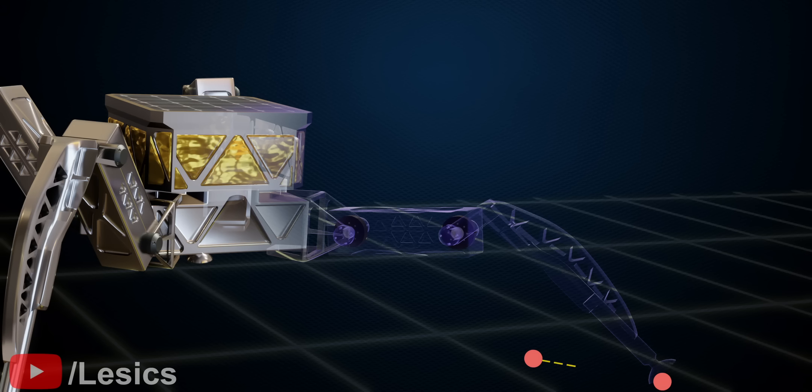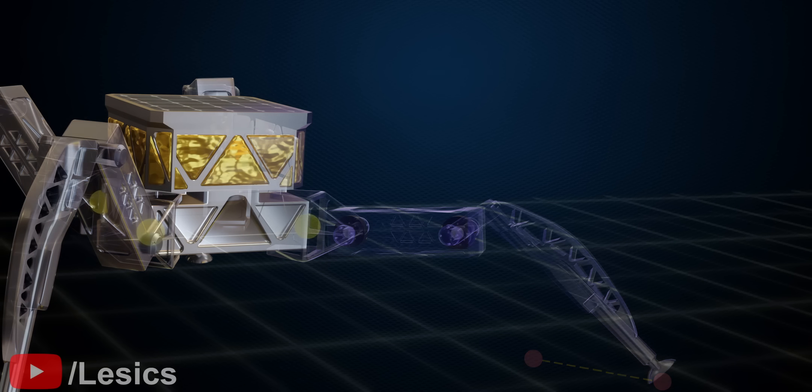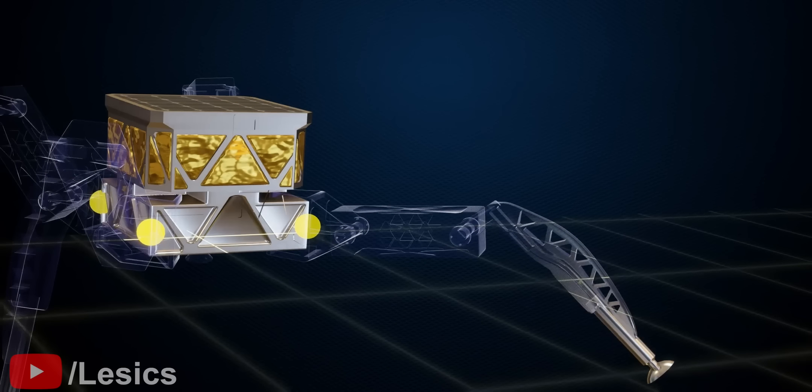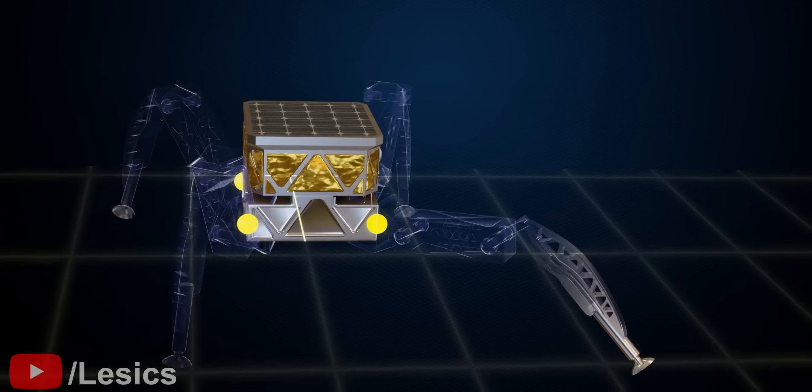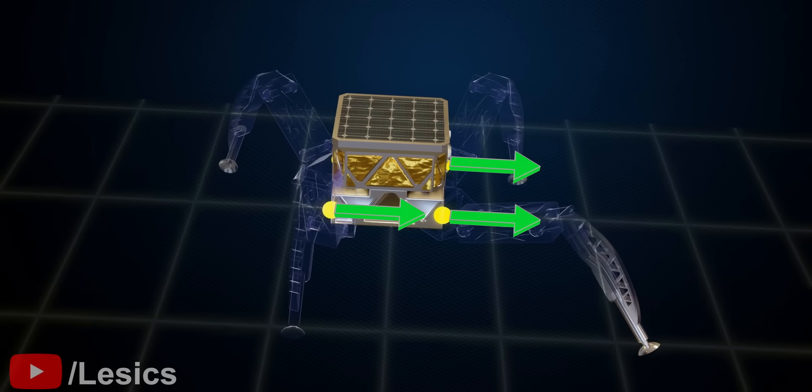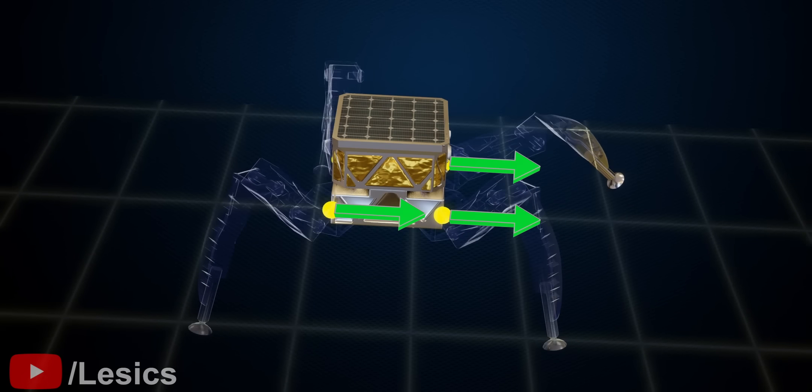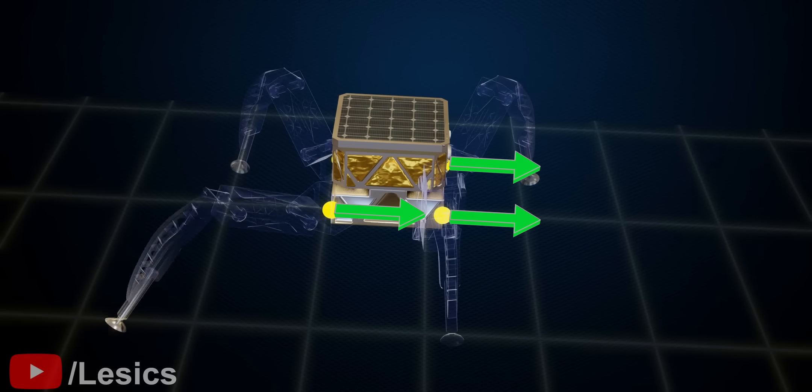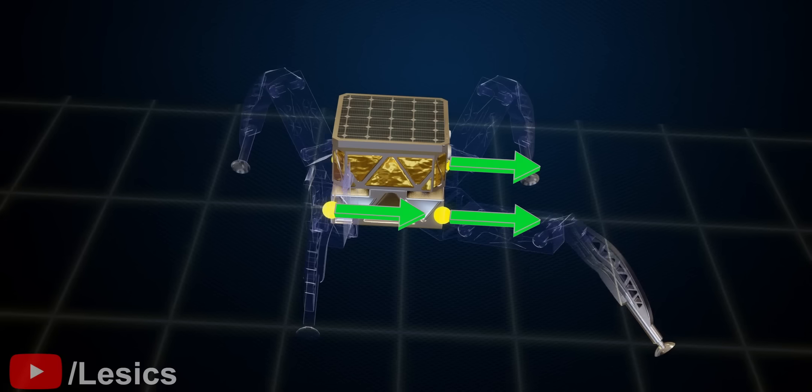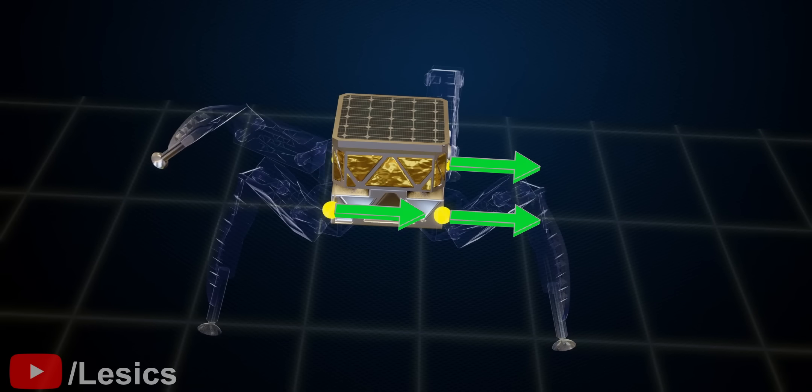It is clear here that the contact point of this leg has moved forward. In this condition, if the rover body also moves forward, we are done with the rover's forward motion. Let's see how the rover body can be moved forward like this. Before proceeding further, we should clearly understand how these yellow points are affected by the rotation of the two motors.